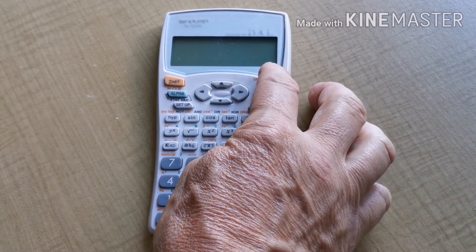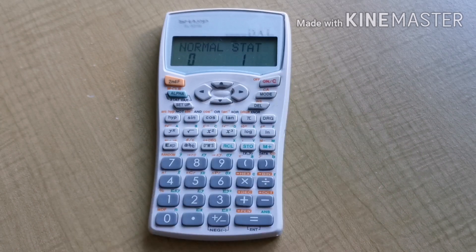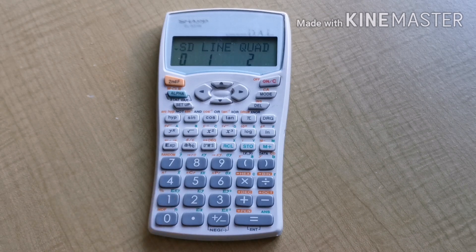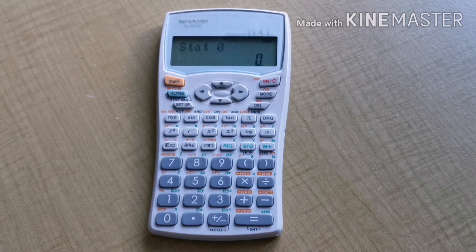First we turn on the calculator with the on button, then we press the mode button because we want stat mode. On screen it tells us that if we press 1 it will take us to stat mode, so we press 1. This offers us three different stat modes: 0, 1, and 2. We choose the simplest of those, 0, which is for standard deviation mode. So I press the 0 key.